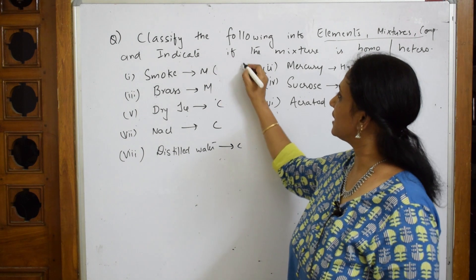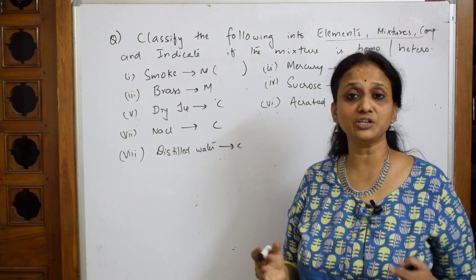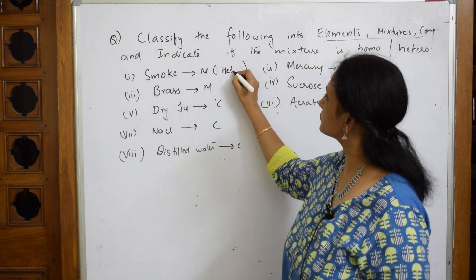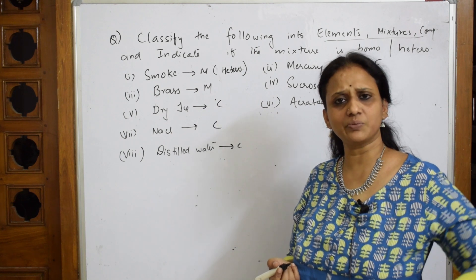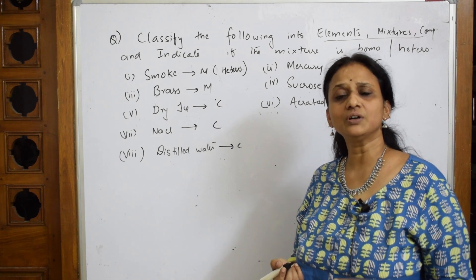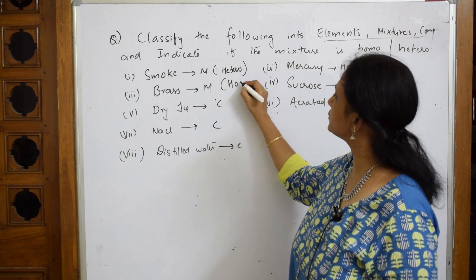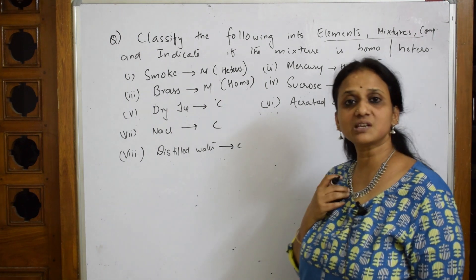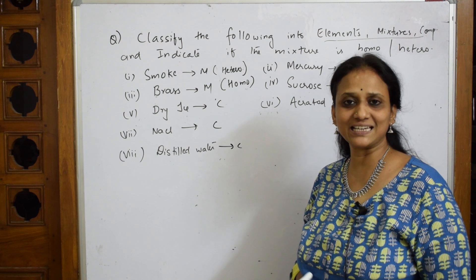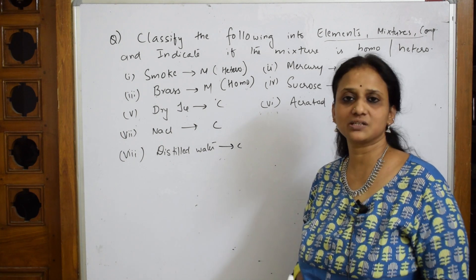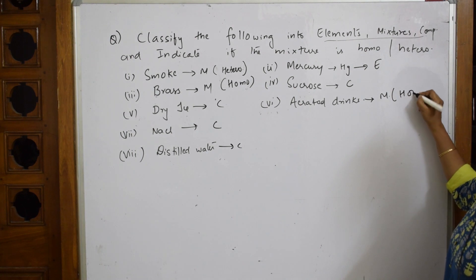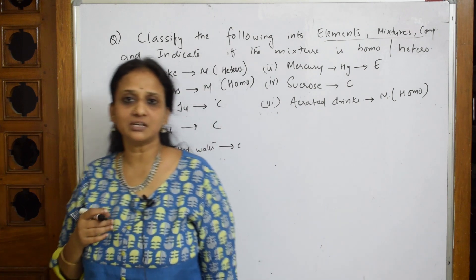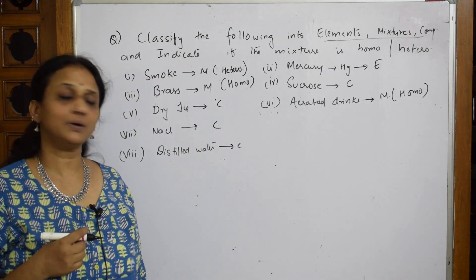Smoke is a combination of different gases — the composition is not the same all over, so it is a heterogeneous mixture. Brass has the same ratio of copper and zinc throughout, so it is a homogeneous mixture. Aerated drinks also have the same even composition throughout — you won't get the same tanginess otherwise — so aerated drinks are homogeneous. Remember what is an element, what is a mixture, what is a compound, and divide them accordingly.